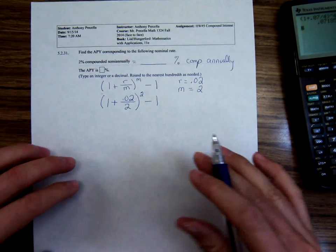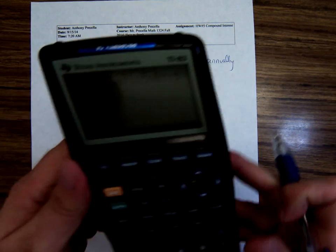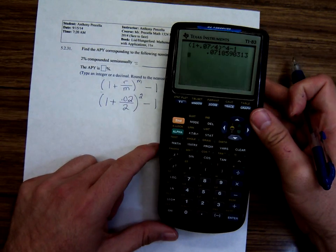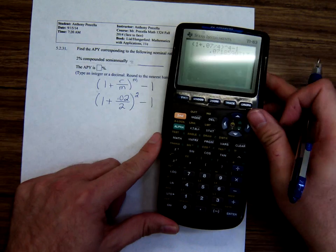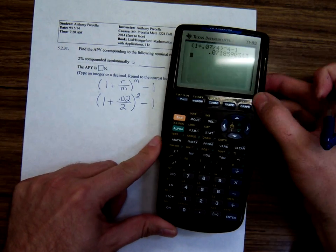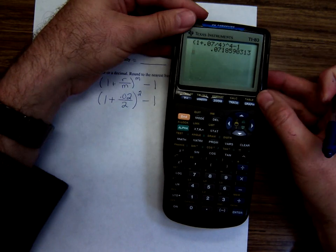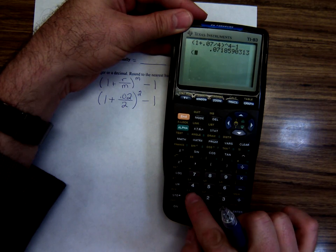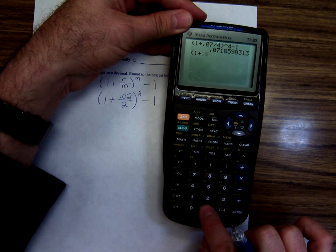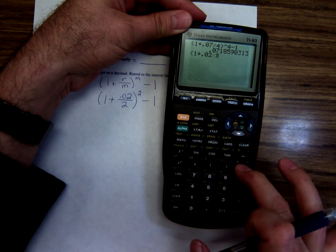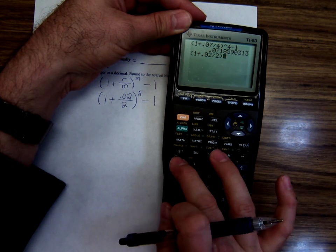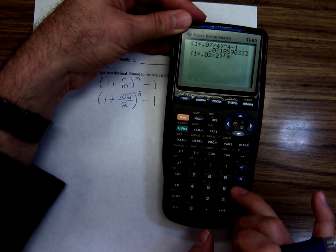What am I about to do? Let me try punching this into the calculator again. I'll go parentheses, 1 plus 0.02 over 2, close parentheses. And I'm just going to hit the square key. Then minus 1.